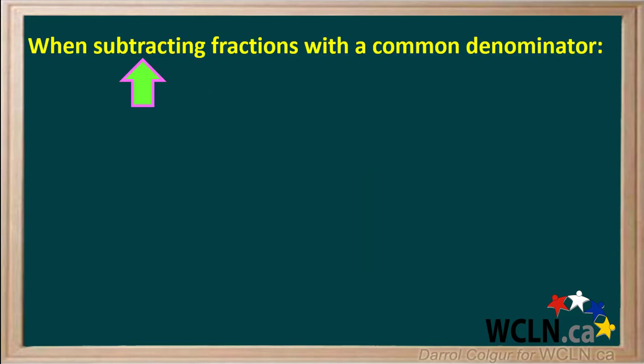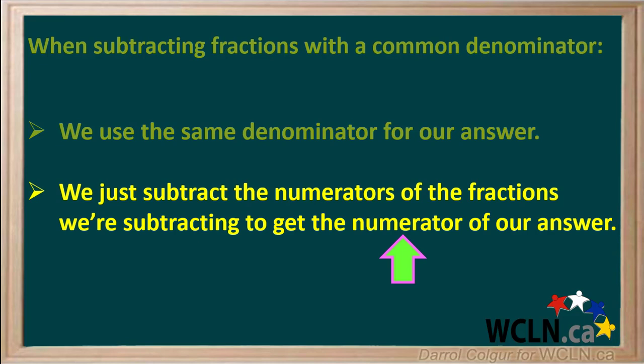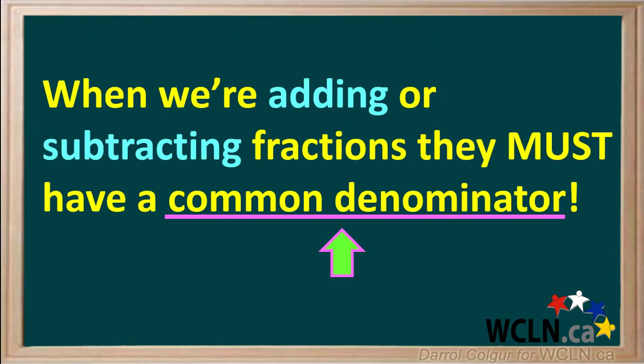We can summarize by saying, when we're subtracting fractions with a common denominator, we use the same denominator for our answer. And we just subtract the numerators of the fractions we're subtracting to get the numerator of our answer. As you do more math, you'll be doing more examples of adding and subtracting fractions. And remember that when we're adding or subtracting fractions, they must have a common denominator.